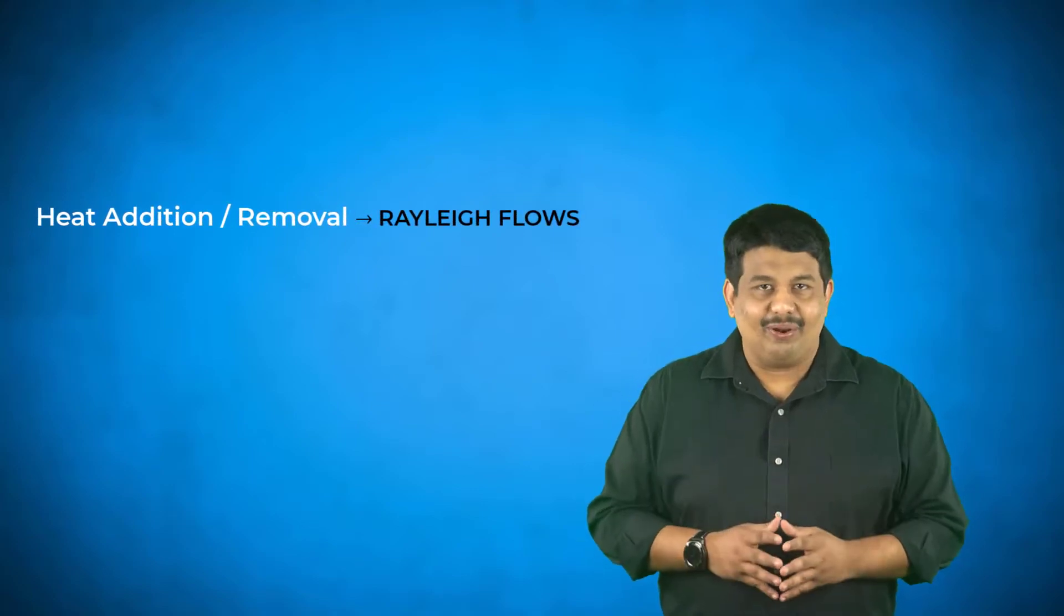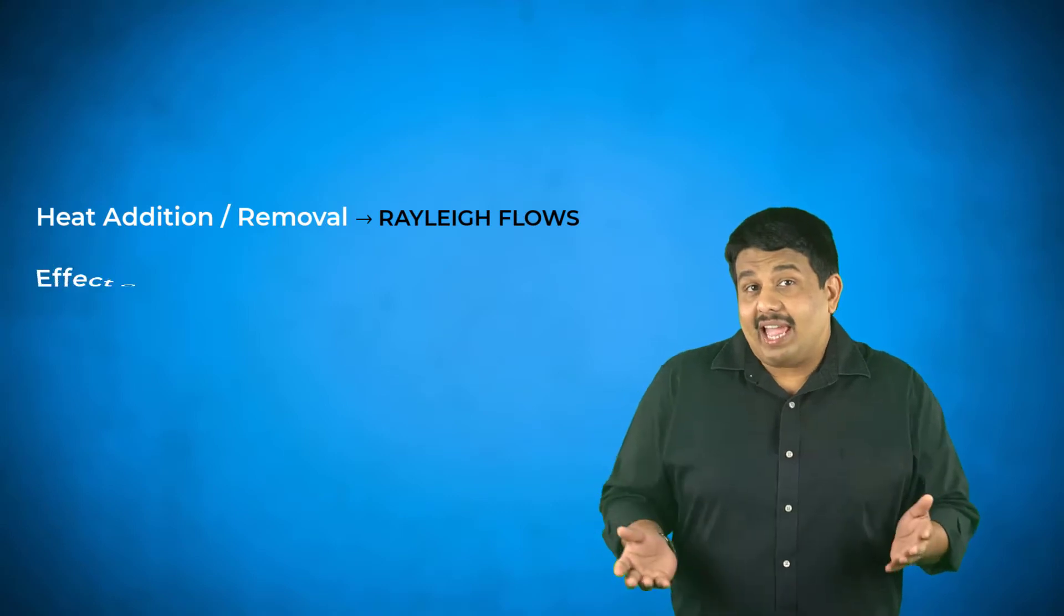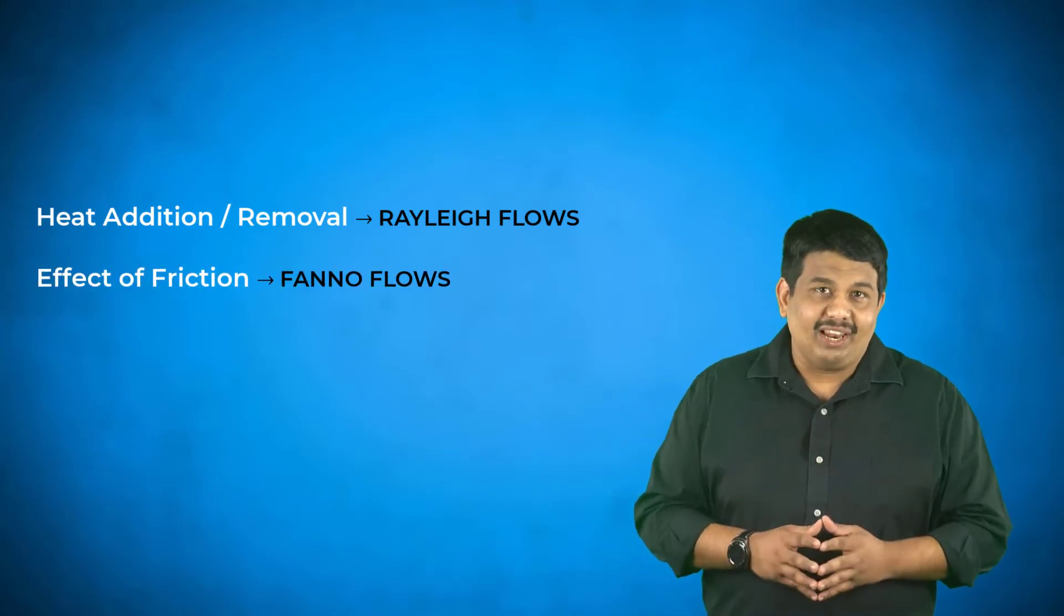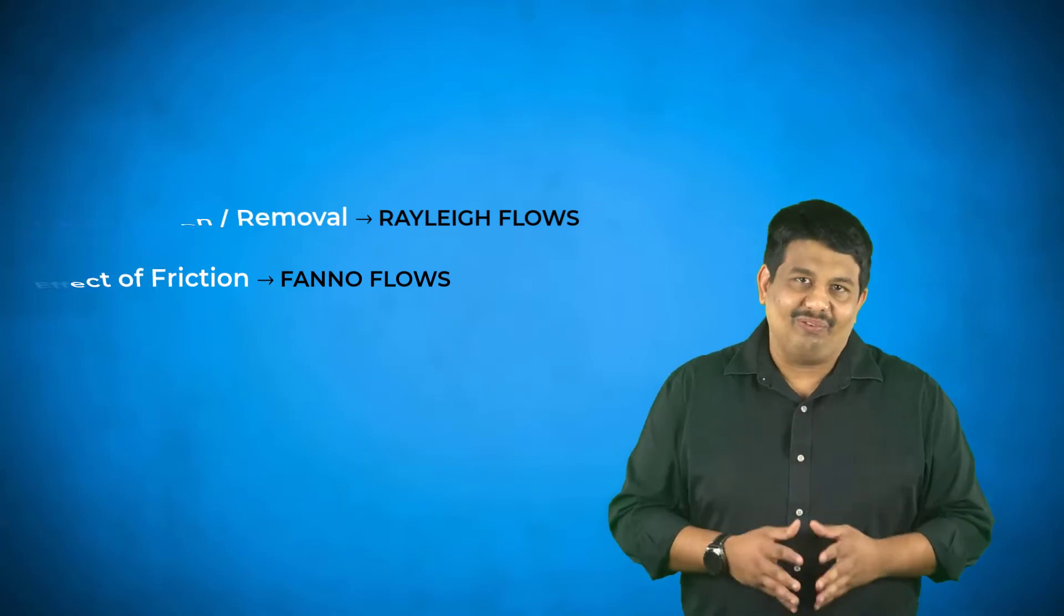One-dimensional compressible flows where heat is added or removed from the flow are often called Rayleigh flows. When the effect of friction is considered, such one-dimensional flows are called Fanno flows. In this lesson, we will learn about these two types of flows.